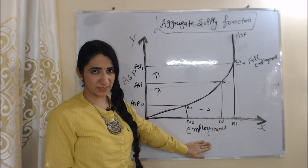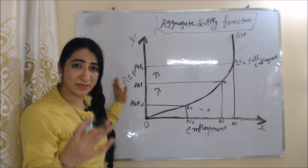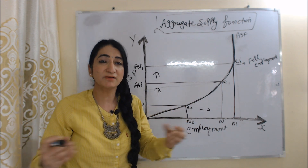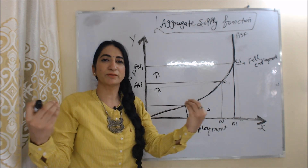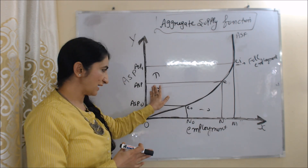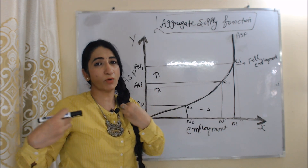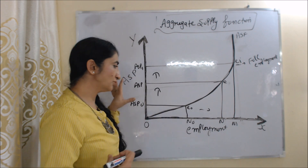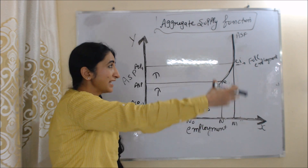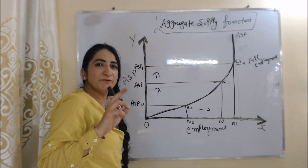We will see aggregate supply price with the help of this diagram. On the x-axis we have employment, and on the y-axis we have aggregate supply price. As we discussed, aggregate supply price is the amount that organizations must receive; otherwise, they will not hire more employees and may terminate existing ones. As aggregate supply price increases, employment also increases. This is our ASF curve — the aggregate supply function curve.